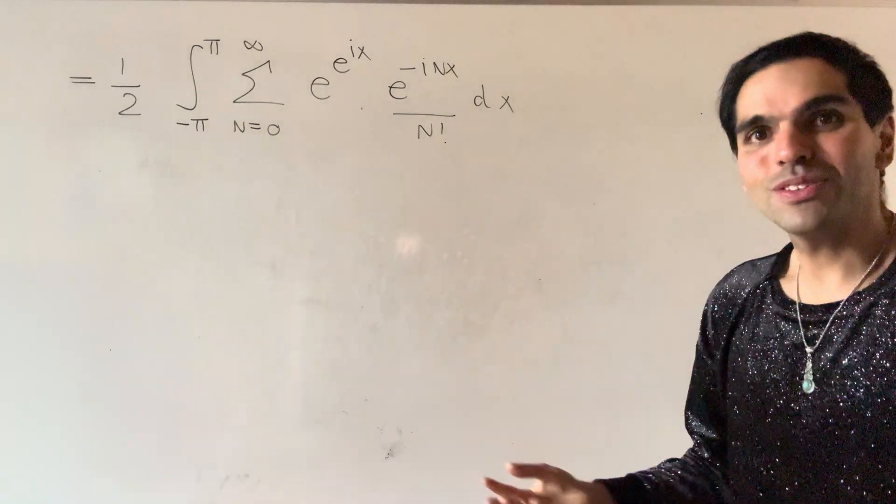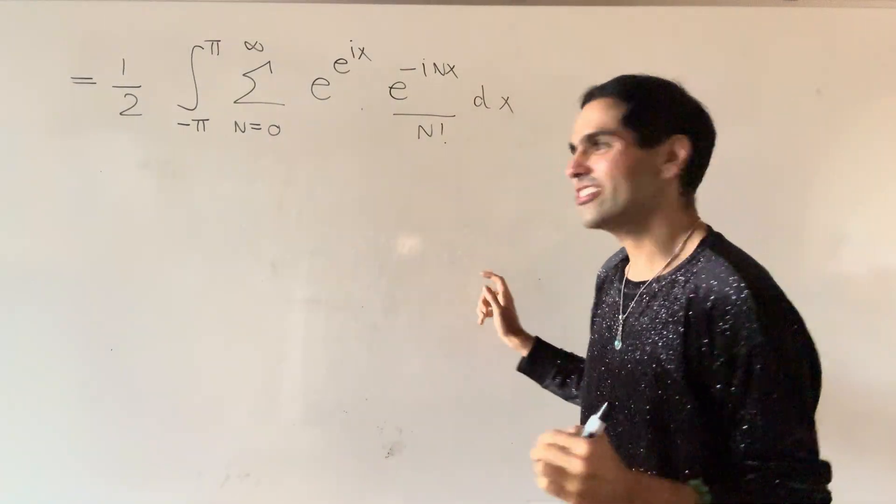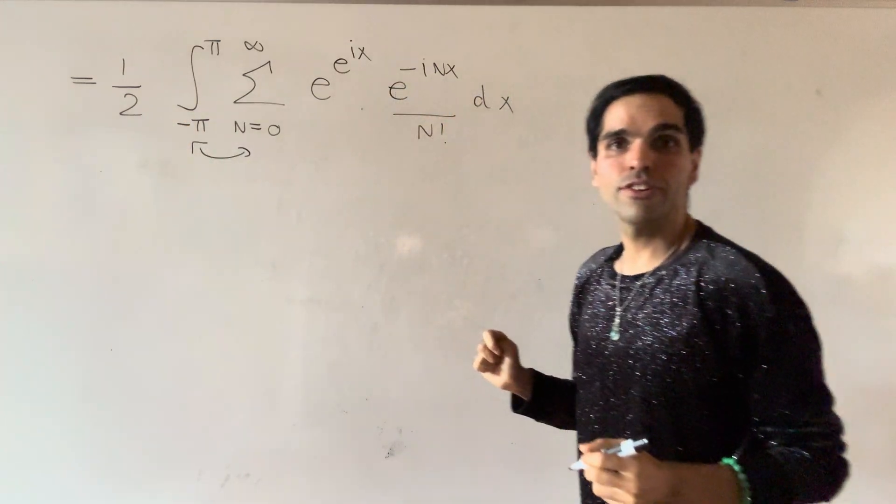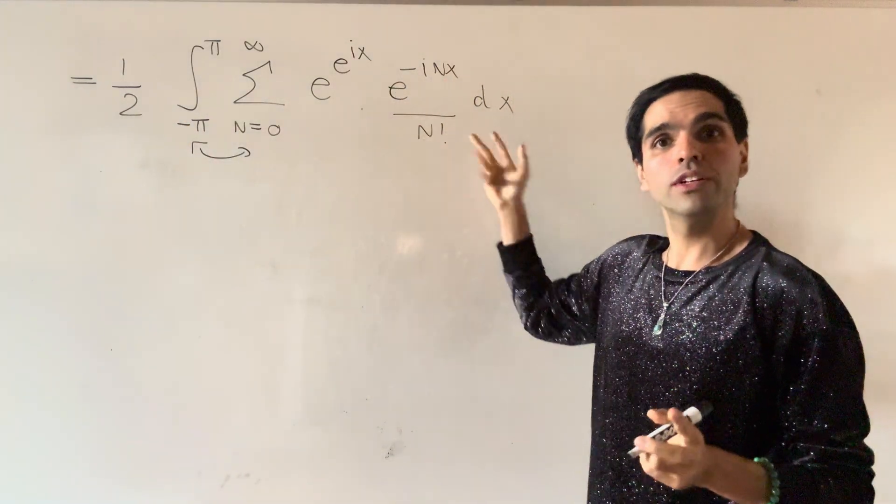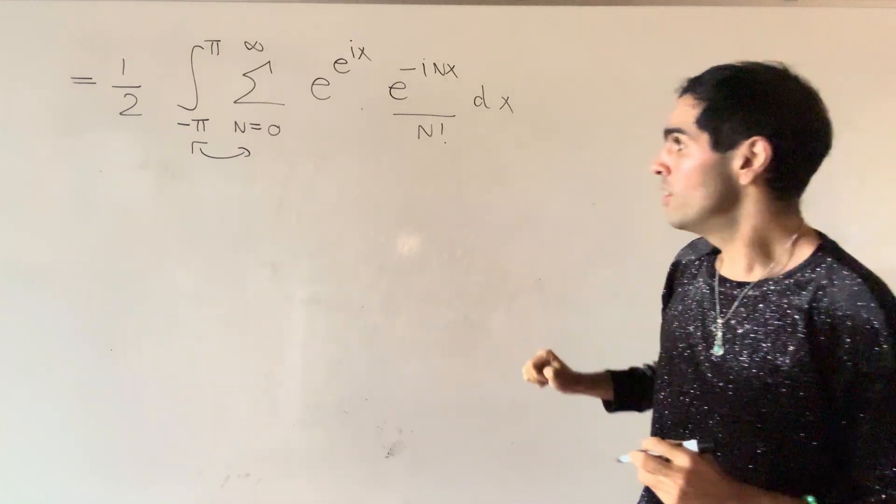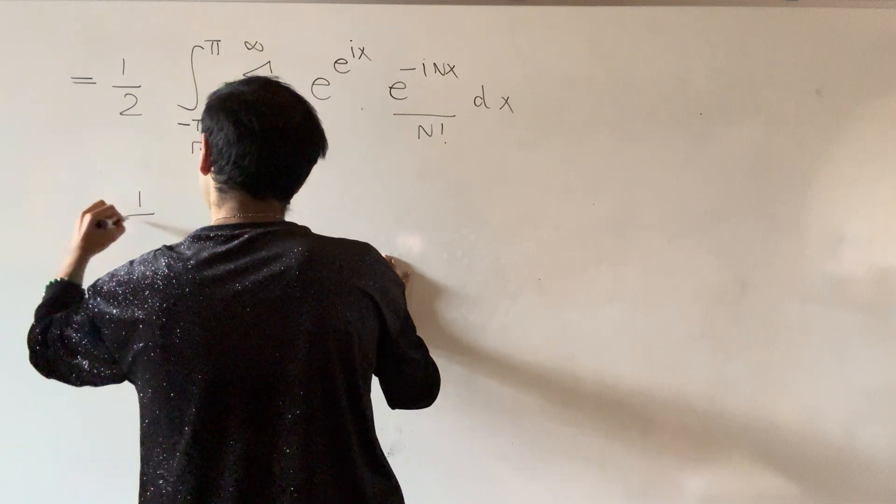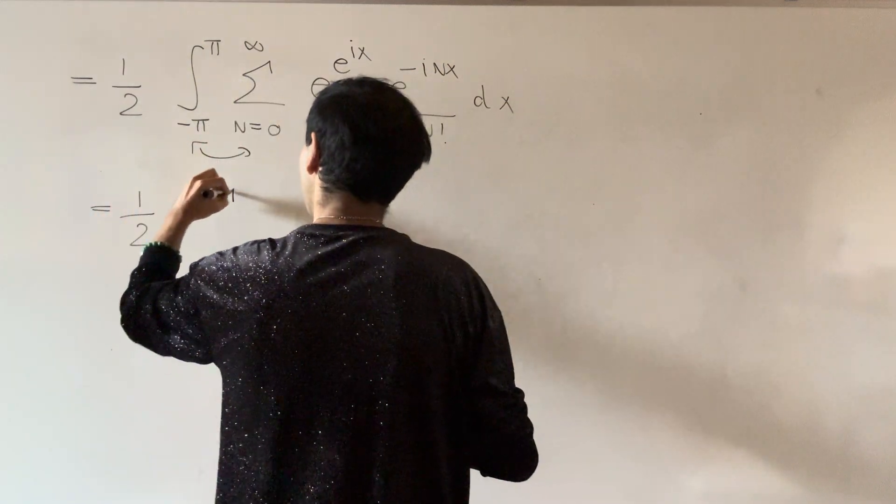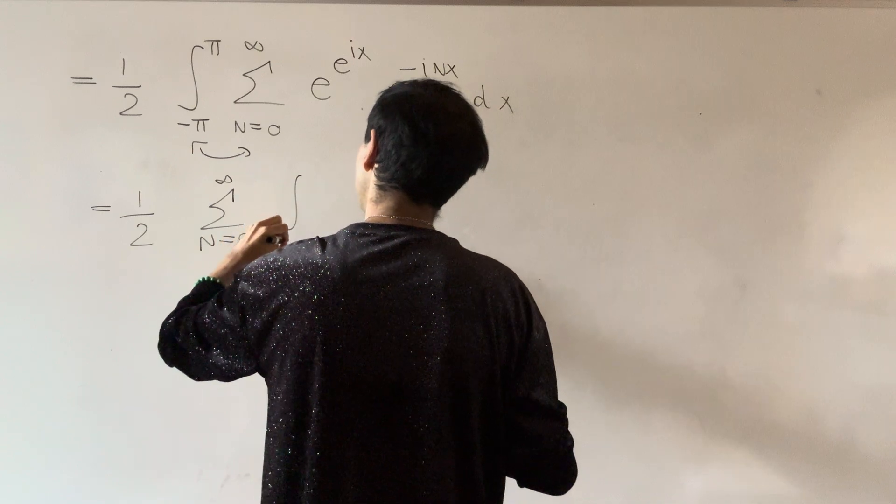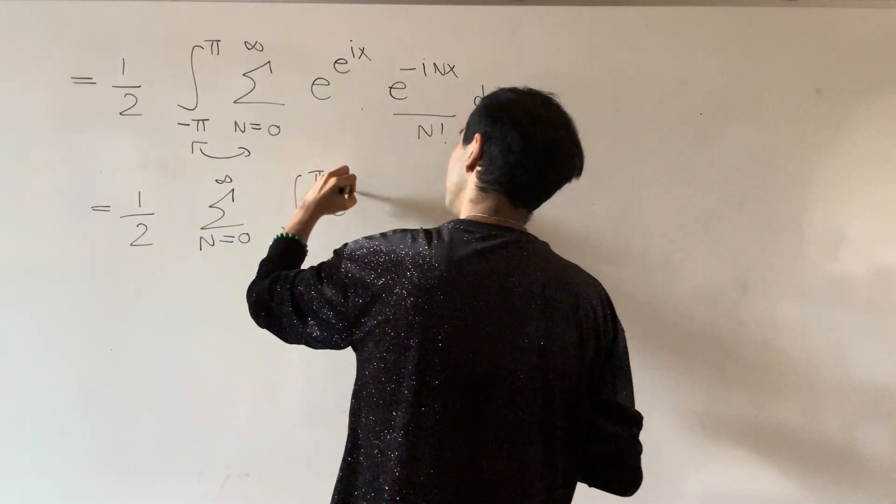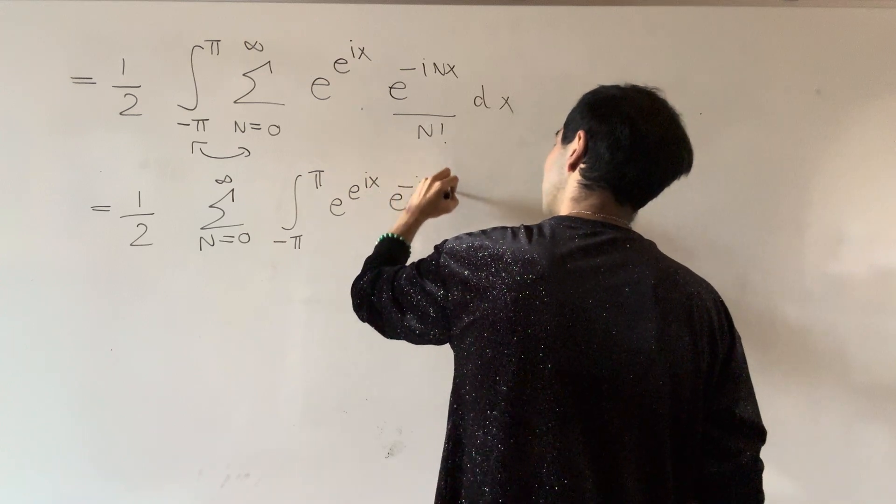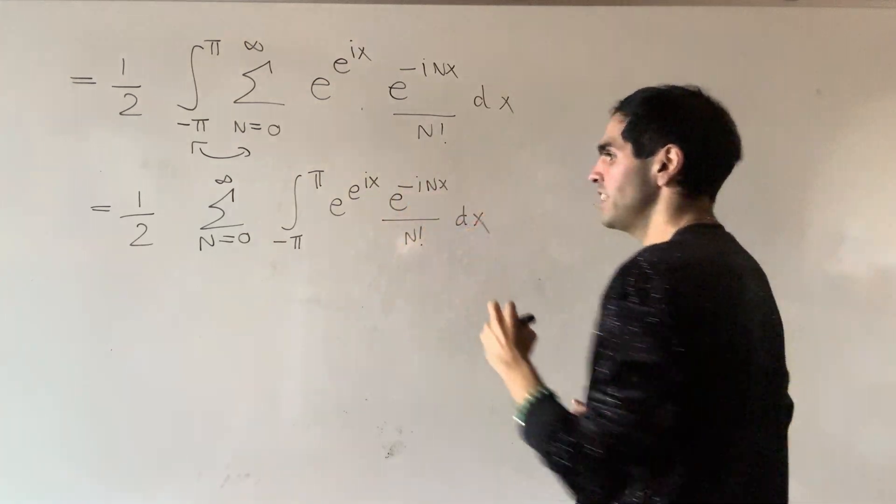And now we want to do something that's kind of illegal, but we'll still do it. Let's interchange the integral and the sum, which we can probably do due to the dominated convergence theorem because of this one over n factorial, and then we're left with one half of the sum from 0 to infinity of the integral from minus pi to pi of e to the i x, e to the minus i n x over n factorial dx.